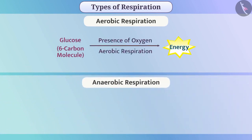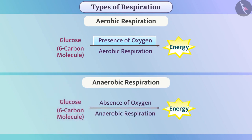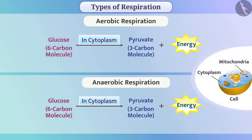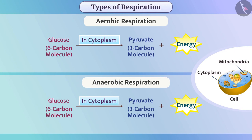In aerobic respiration, glucose is broken down completely into carbon dioxide and water in the presence of oxygen, and energy is obtained. In anaerobic respiration, glucose is broken down without using oxygen and energy is obtained. Aerobic respiration produces more energy than anaerobic respiration. The first step of both processes is the same: the 6-carbon molecule glucose in the cytoplasm is broken down into the 3-carbon molecule pyruvate and energy is generated.